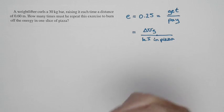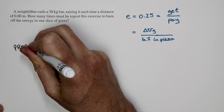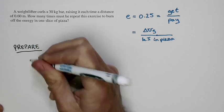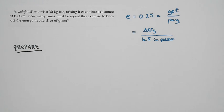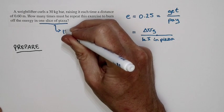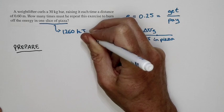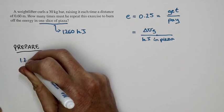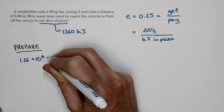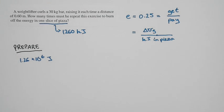Let's go ahead and set this problem up — our prepare step. We need to do a couple of pieces of background work. First off, how much energy is in a slice of pizza? This is something you can look up in the book; there's a table. The energy in a slice of pizza is given as 1260 kilojoules, or 1.26 times 10 to the sixth joules. That would be a pretty thick slice, but that's the amount of energy in one slice.